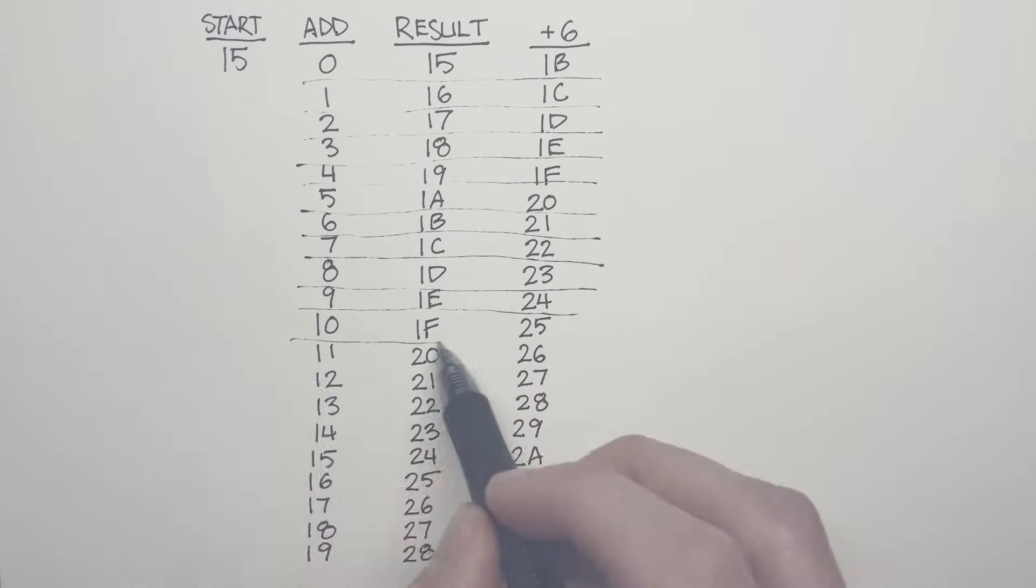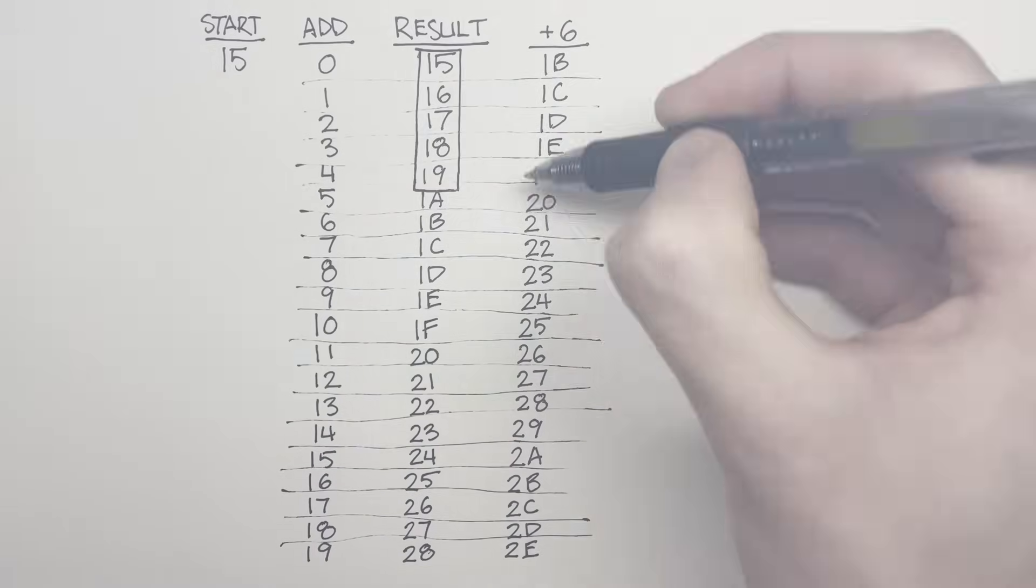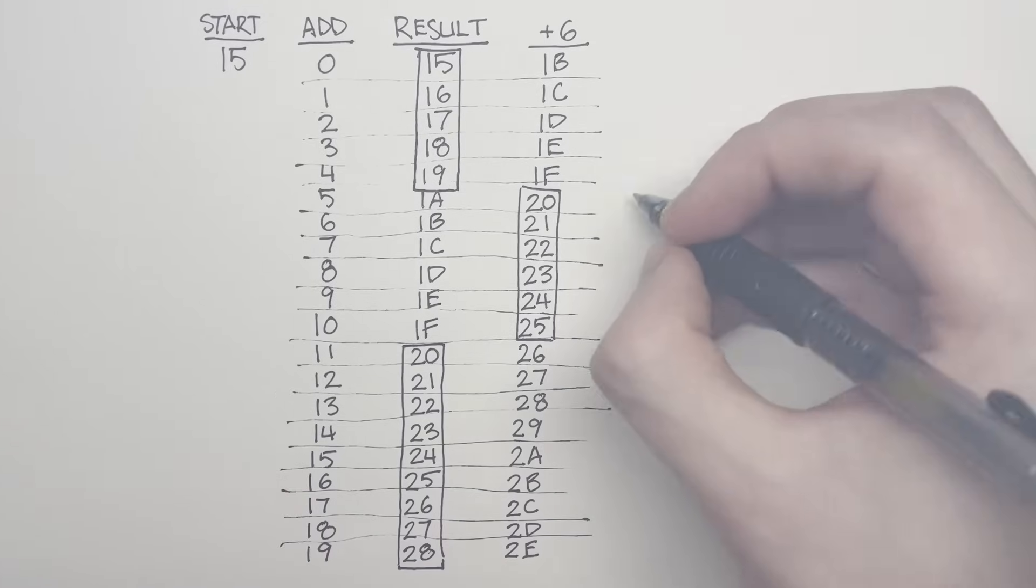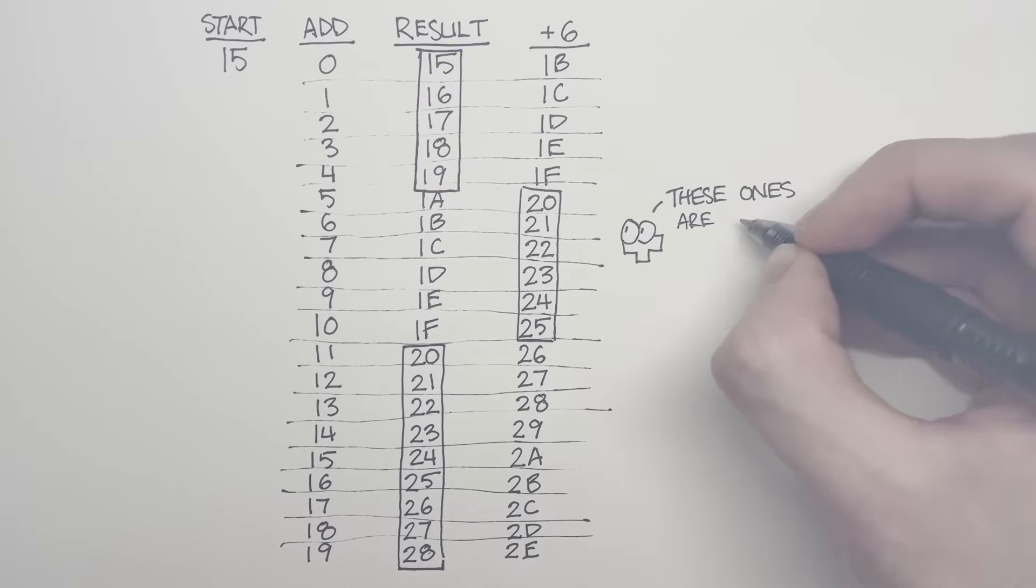We're going to ignore those ones at the very bottom where adding 6 doesn't work. It's not important for us. If so, then all we need to do is get the game to pick between not adding 6 and adding 6. And we're golden. Now, let me highlight the cells that NES Tetris picks.